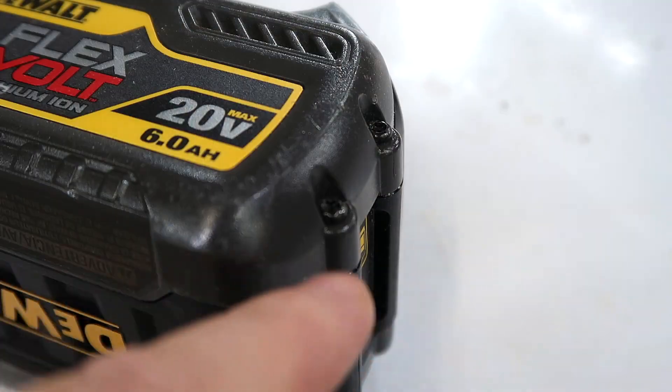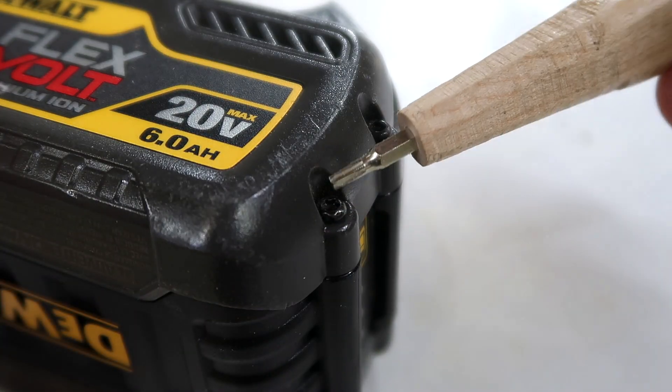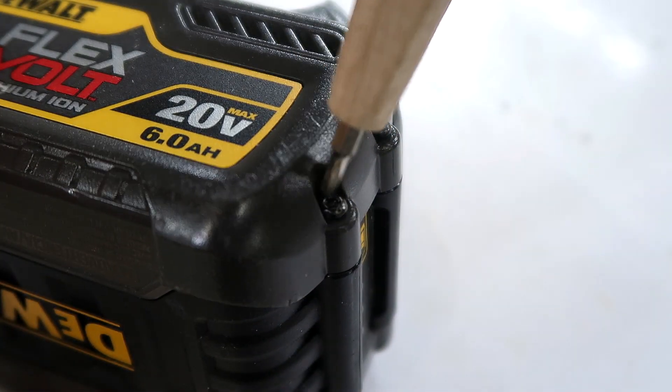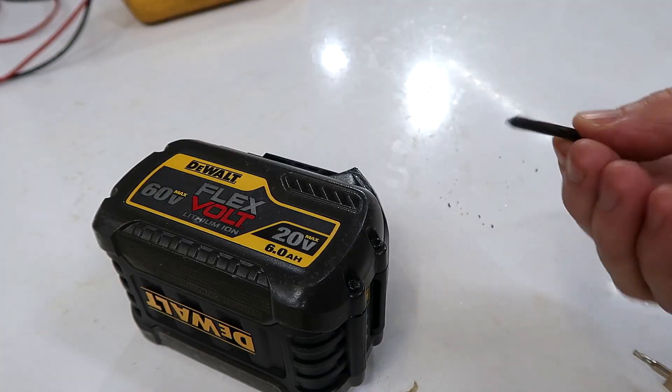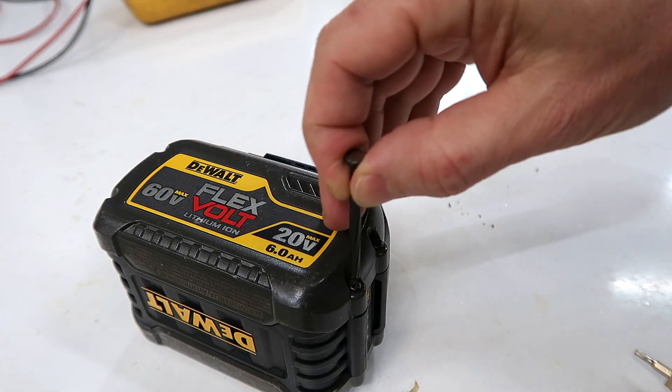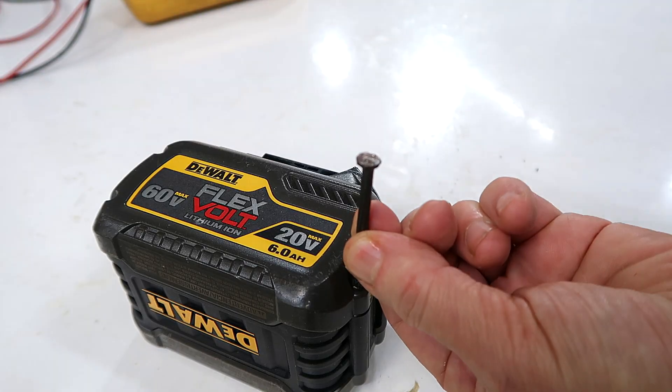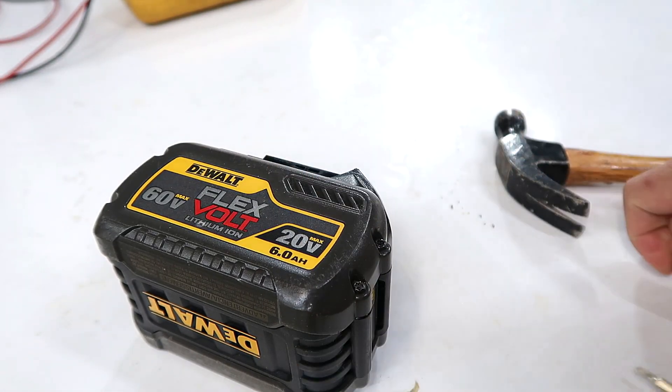I got myself a DeWalt battery that no longer takes a charge, so let's have a look inside. It's put together with star-shaped screws, the size of a T9 but with a little pin in the middle. I got myself a concrete nail here and put that between the pin and the outside of the screw to break out that pin.